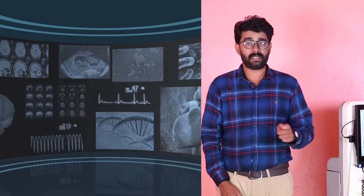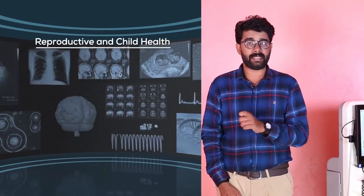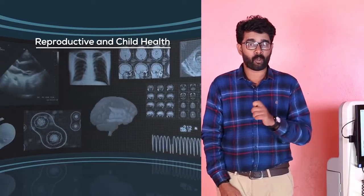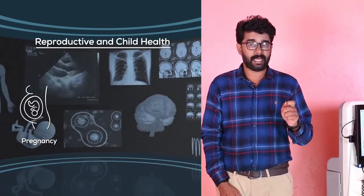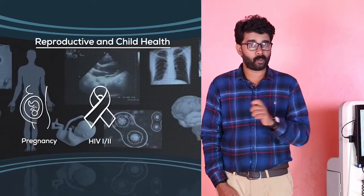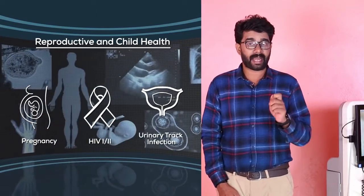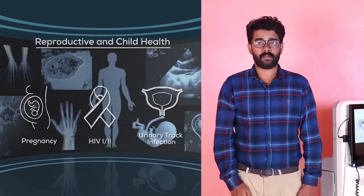The third is Reproductive and Child Health, where you can get the report of Pregnancy, HIV 1 and 2, and Urinary Tract Infection.